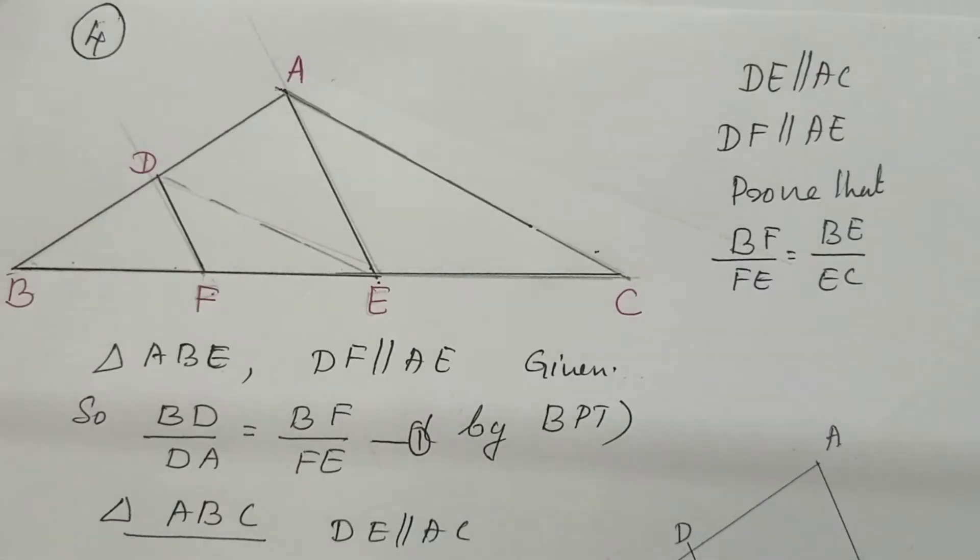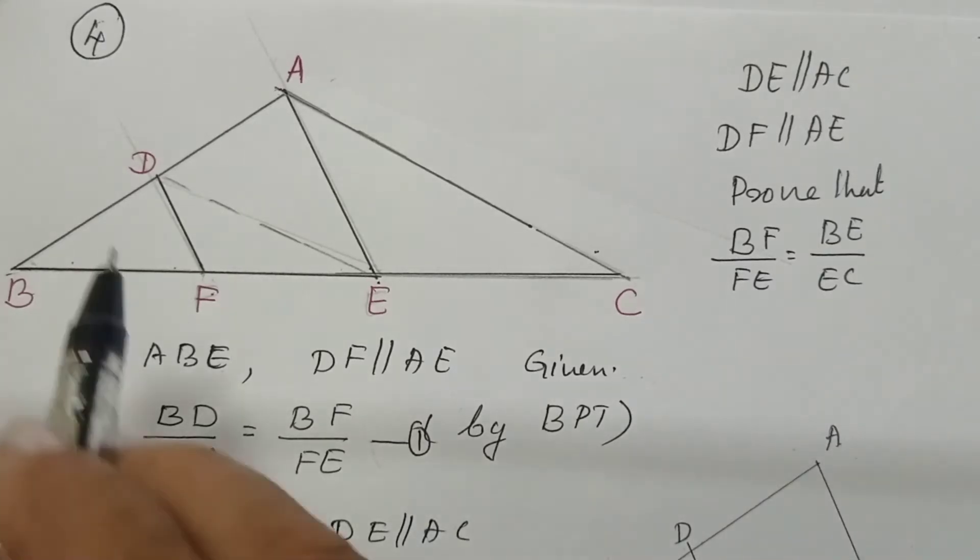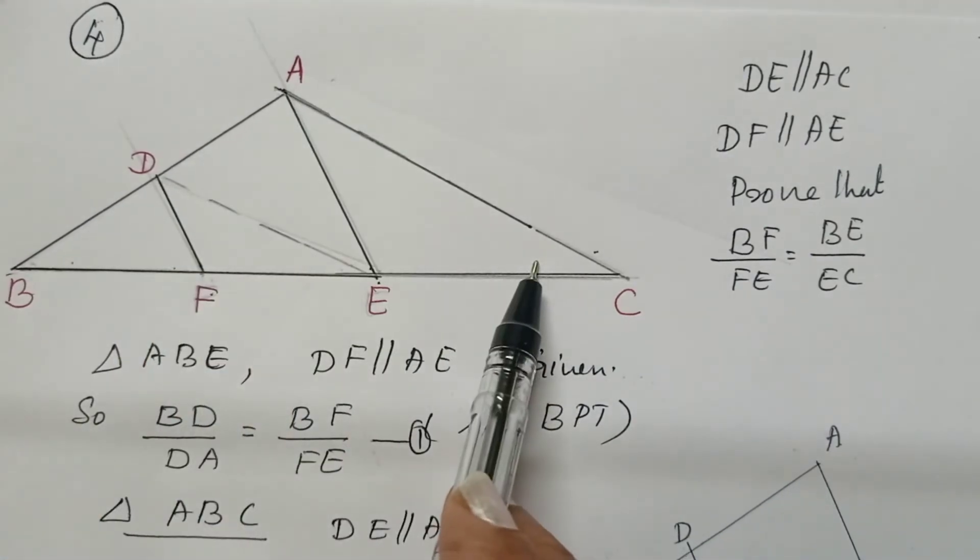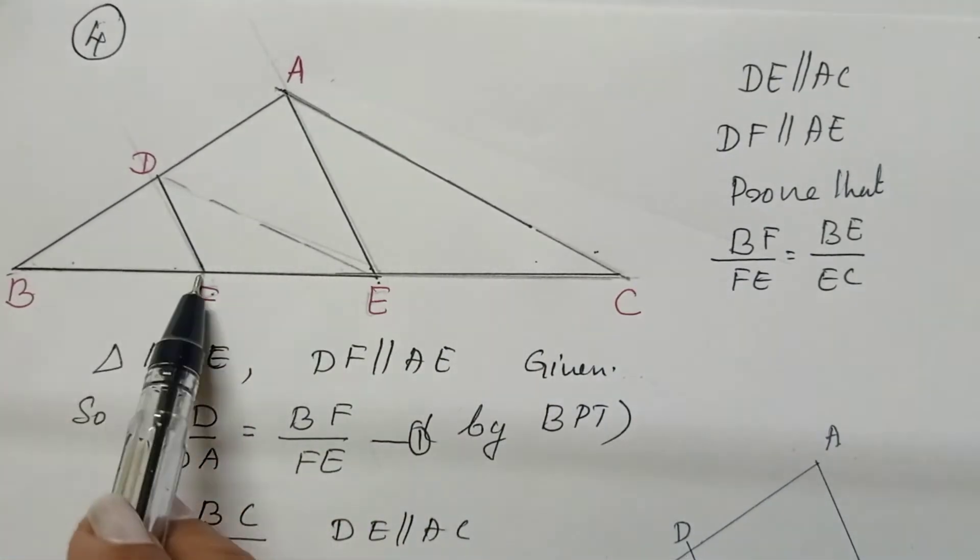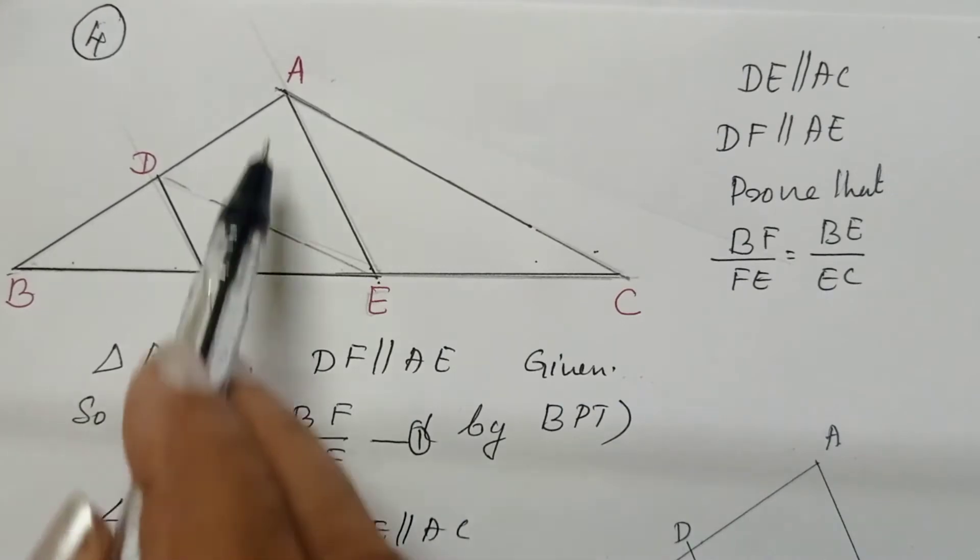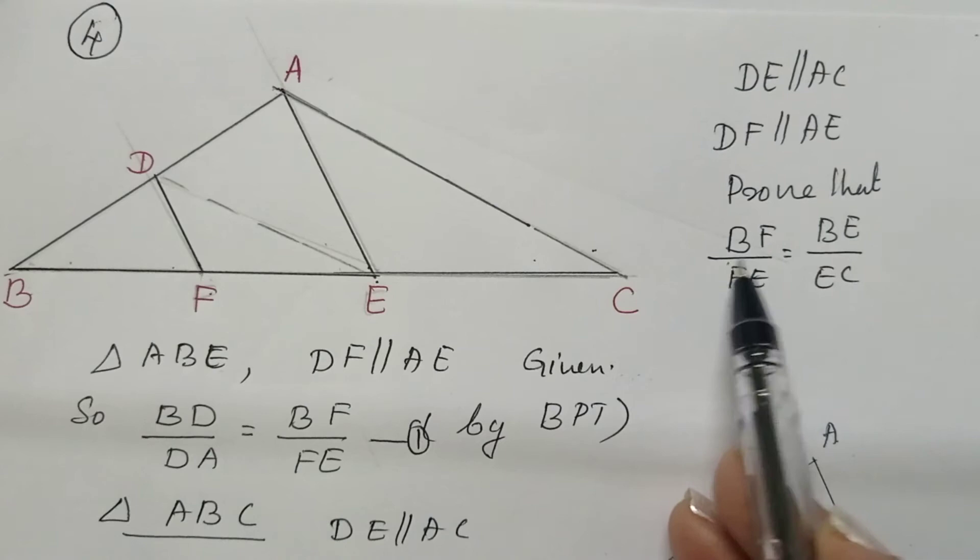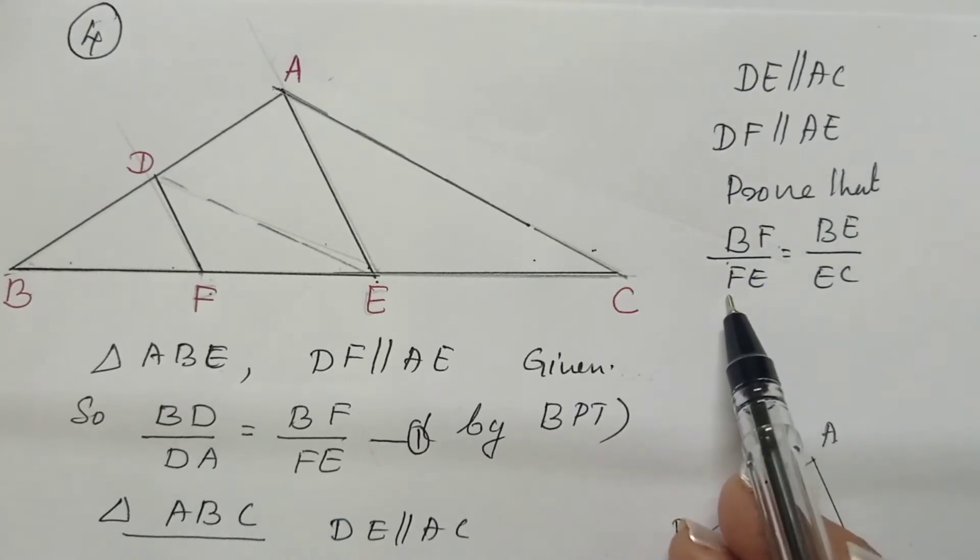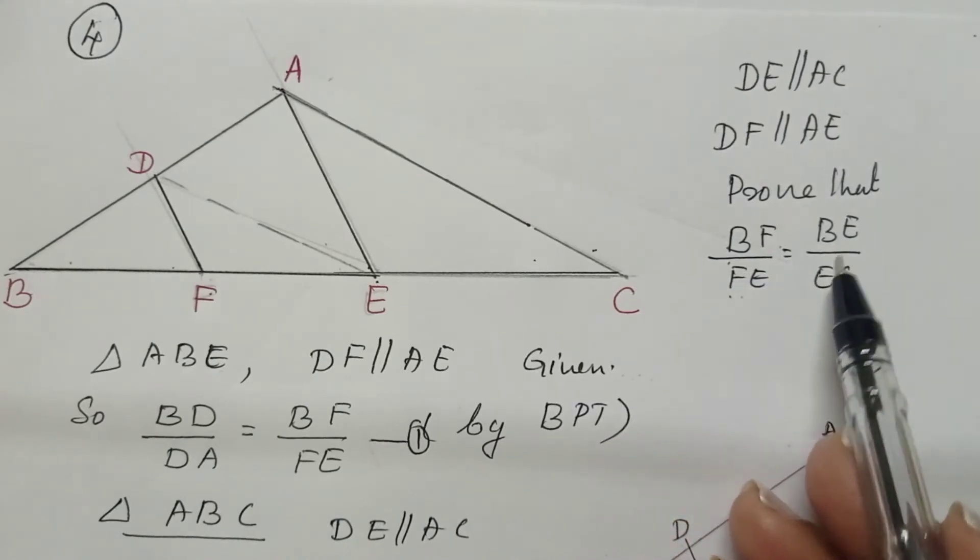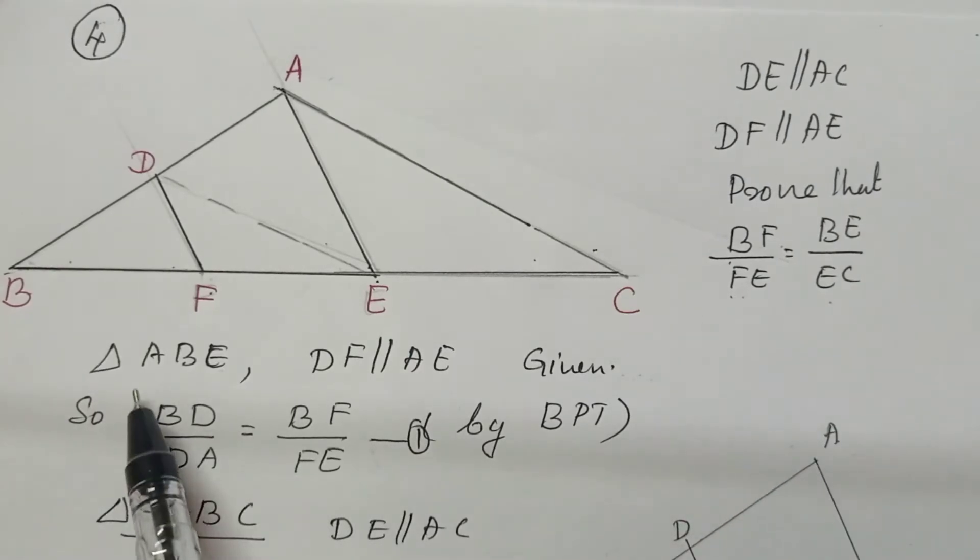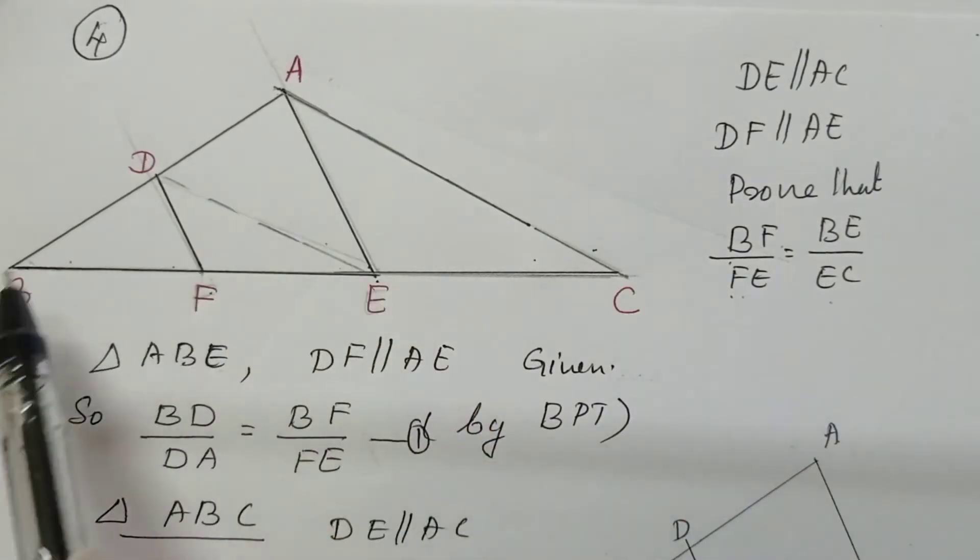In the figure, DE is parallel to AC and DF is parallel to AE. Prove that BF divided by FE is equal to BE divided by EC. First, take triangle ABE.